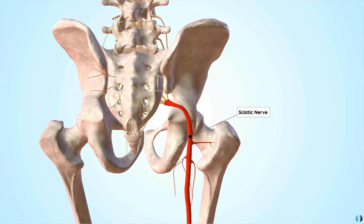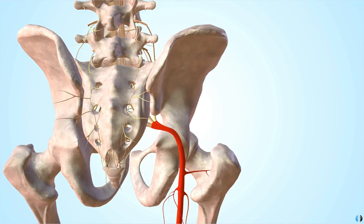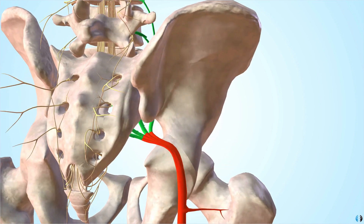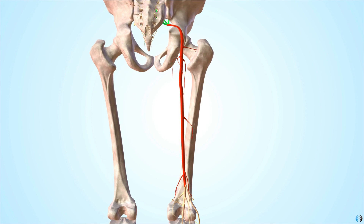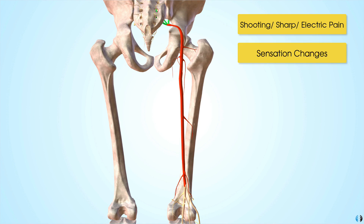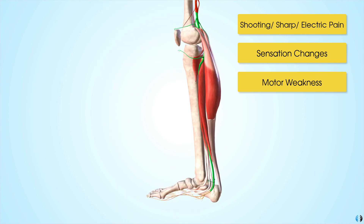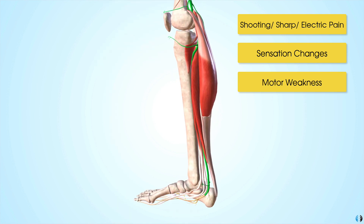So what is sciatica? Sciatica is a direct pathology of the sciatic nerve. This nerve runs from the lower back through the buttock region and then down the back, or posterior aspect, of the leg. It can give rise to all kinds of different symptoms, including a shooting sharp electric pain, sensation changes like pins and needles and numbness, or motor weakness changes where individuals might have weakness in the foot, particularly in the calf muscle for plantar flexion.